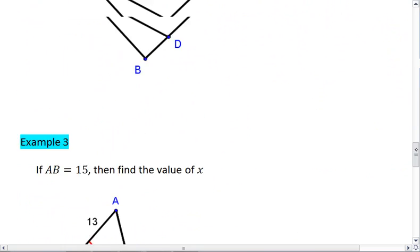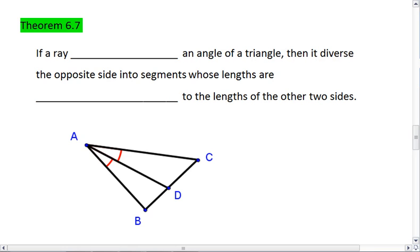Our last theorem, theorem 6.7, tells us that if a ray bisects an angle of a triangle, then it divides the opposite side into segments whose lengths are proportional to the lengths of the other two sides.